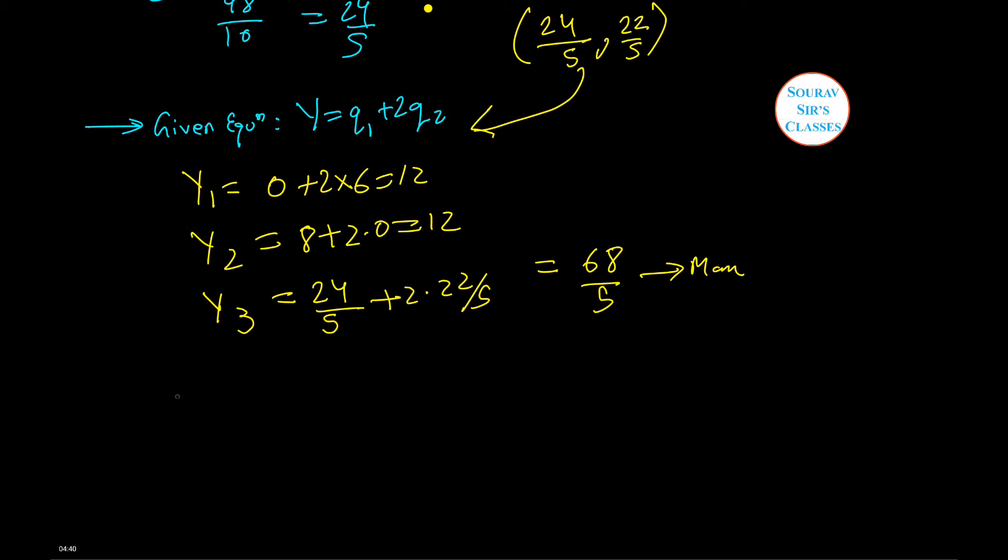So the solution is nothing but 24 by 5 comma 22 by 5, that is Q1 and Q2 that we have obtained from the equation.